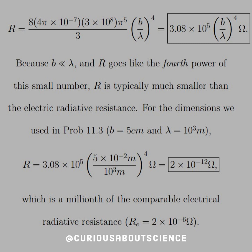Now, R is typically much smaller than the radiative resistance. For the dimensions we used in problem 11.3, we'll let B equal 5cm and lambda equal 10 to the 3m. And then you see that that dimension gets really small since you have 5 times 10 to the negative 5 to the 4th. So that's going to be negative 20, once we multiply it by 4. So what we see here is that once we take the dimensions, plug it in, and put it to the 4th power, the resistance is 2 times 10 to the negative 12 ohms.